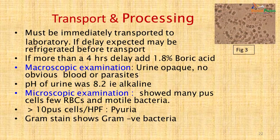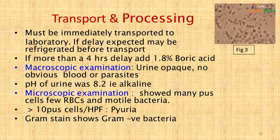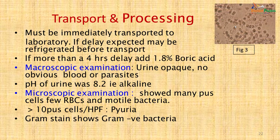Urine should be transported to the laboratory immediately. If delay is expected, urine must be refrigerated. If more than a 4-hour delay is expected, 1.8 percent boric acid can be added to the sample. On microscopy, the urine was opaque with pH 8.2 (alkaline). Microscopic examination showed many pus cells in uncentrifuged urine, few RBCs and motile bacteria. The presence of more than 10 pus cells per high-power field in uncentrifuged urine indicates pyuria and urinary tract infection.